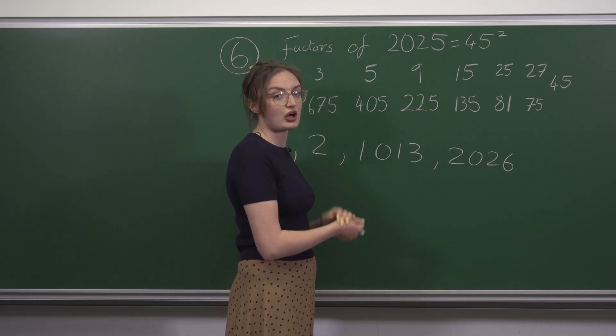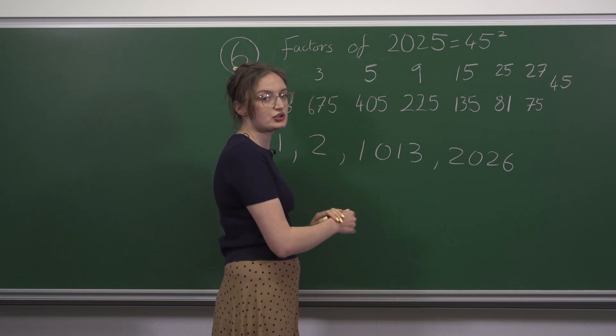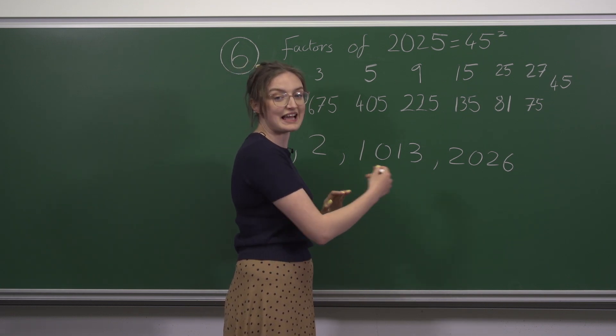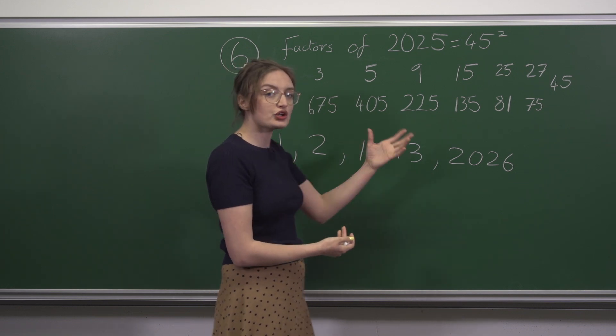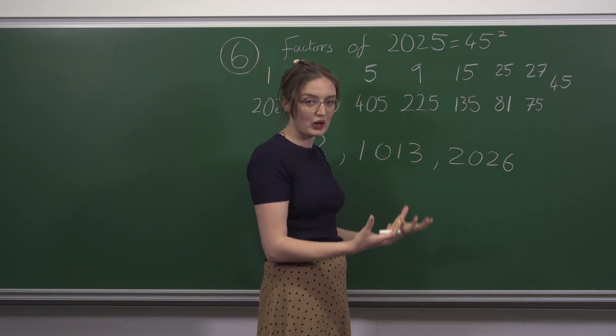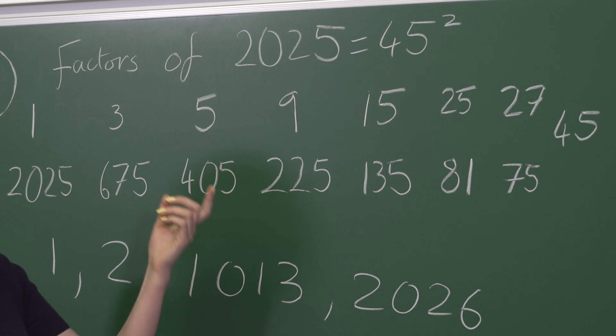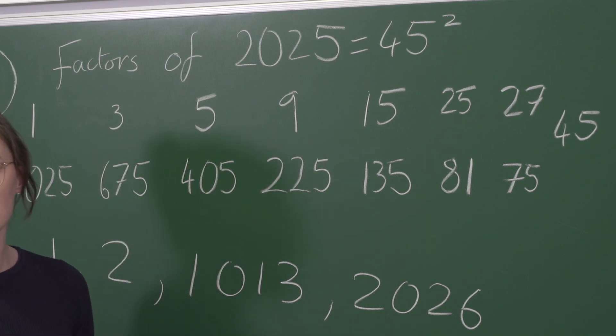In fact, if we think about splitting a number up into 2 times 2 times 2 and so on, times by an odd number at the end, we'll see that the odd number at the end has to be a square in order for the factors to add to an odd number.